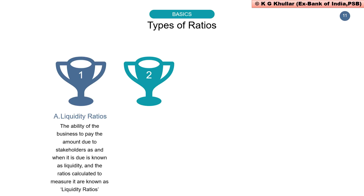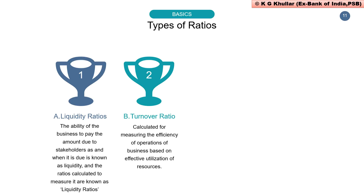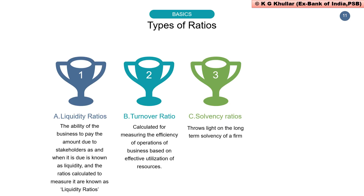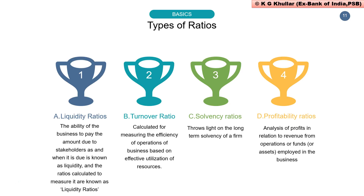The third category is solvency ratios, which throw light on the long-term solvency of a firm. Solvency is the ability of a company to meet its long-term debts and financial obligations, and is very essential for staying in business as it demonstrates the ability to continue operations into the future. The fourth and last set is profitability ratios, which help in analysis of profits about revenue from operations or funds employed in the business. These are the four broad categories of ratios.